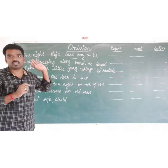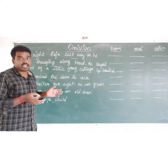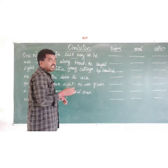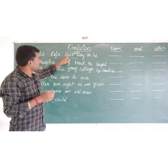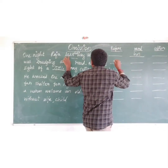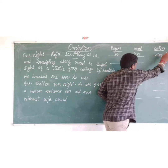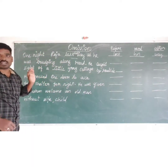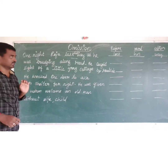Whose way? His way — Raju's way. So there we want to use the possessive pronoun. 'One night, Raju lost his way.' The missing word is 'his'. Before word: 'lost'. After word: 'way'. If you read fluently, we can find the answer easily.